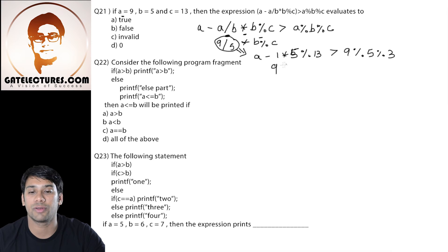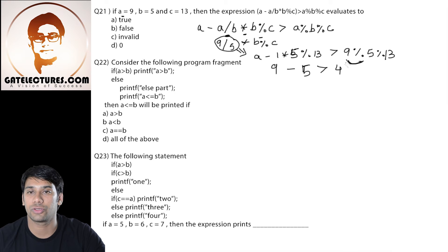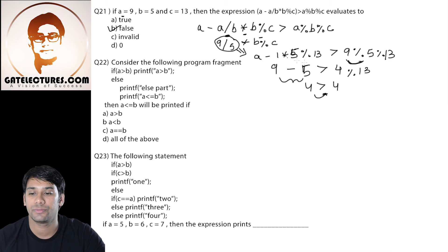The value of A is 9. So this statement becomes 9 minus 1 into 5 modulus 13. If we multiply 1 by 5 this becomes 5, and 5 modulus 13 is 5. Therefore this statement becomes 9 minus 5 which is 4. On the right side: 9 modulus 5 gives remainder 4, and 4 modulus 13 is also 4. So 4 is not greater than 4, which is false. Therefore option number B is correct.